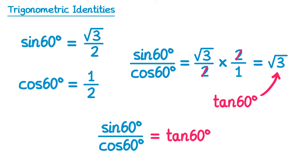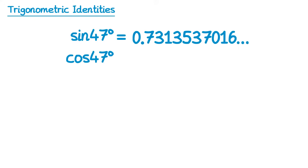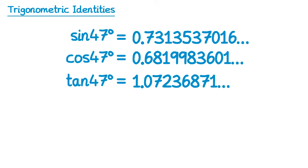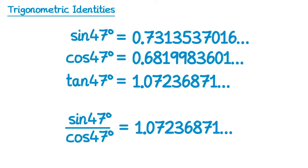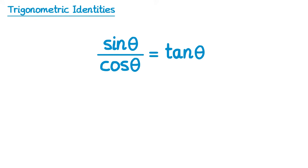Is this just a coincidence or does it work for other angles? Sine of 47 gives this number, cos of 47 gives this number, and tan of 47 gives this number. Sine of 47 divided by cos of 47 matches exactly with tan of 47. It turns out this is always true for any angle theta: sine of theta divided by cos of theta will always give tan of theta. So we replace the equal sign with an identity sign, since it's always true.